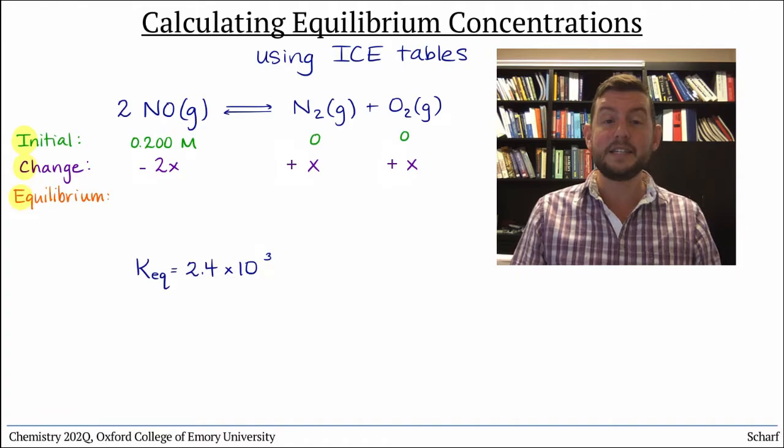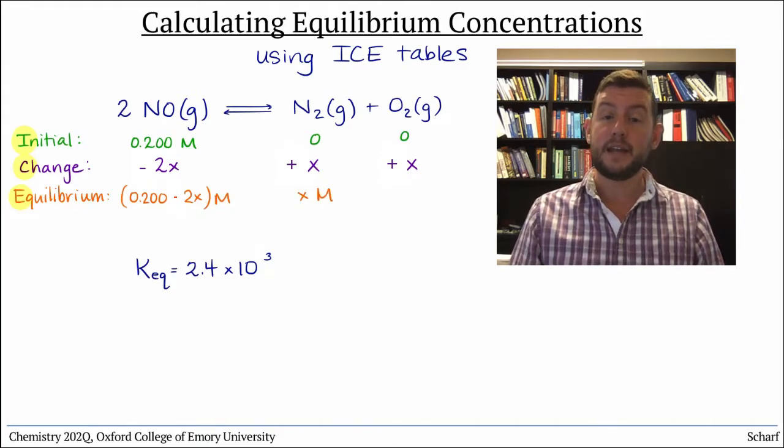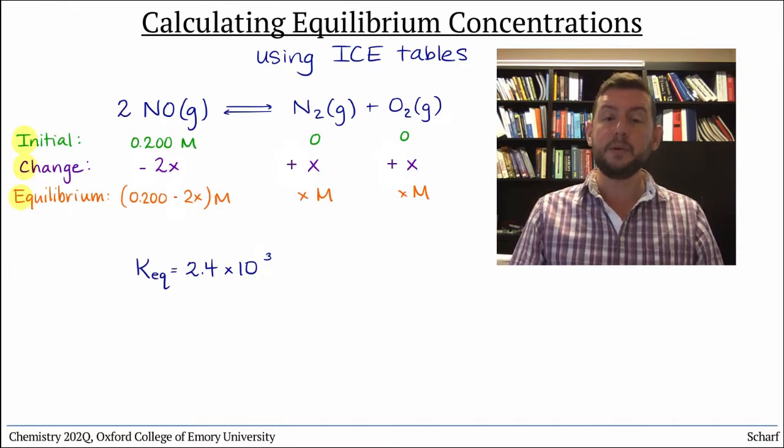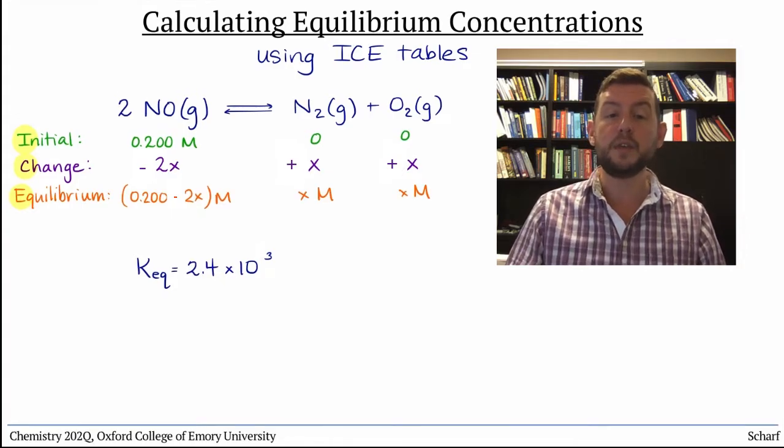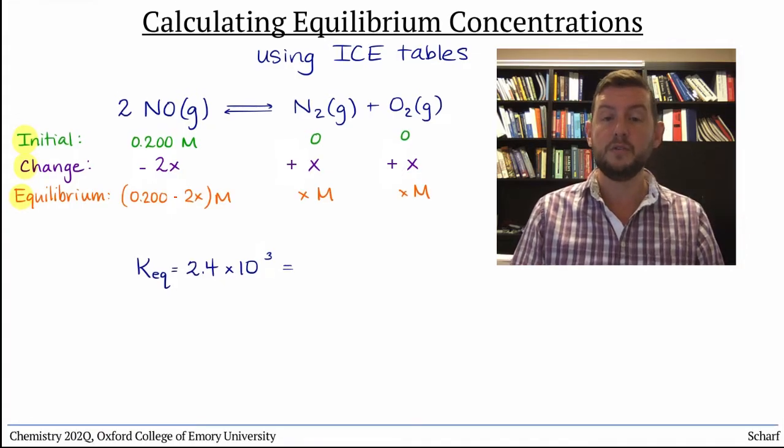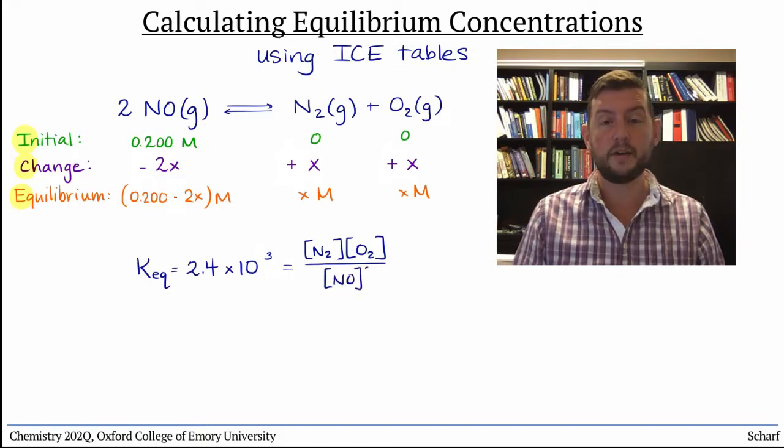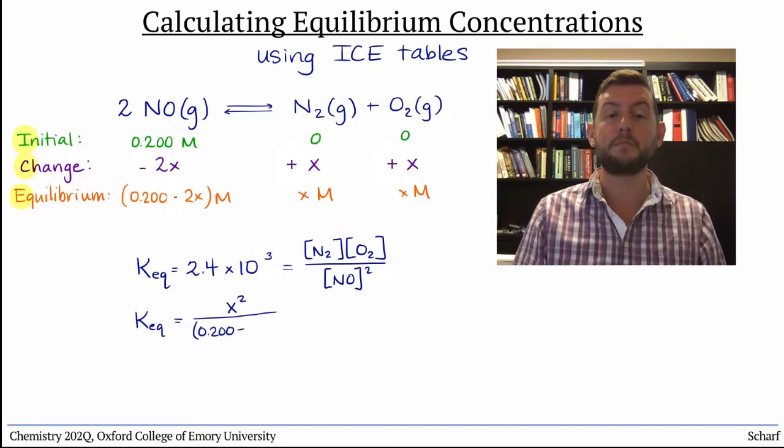So at equilibrium, in the bottom row, we just add up the initial and change rows. Now, here's the fun part. Since we know the equilibrium constant for this reaction, 2.4 times 10 to the 3, and we know that that number must equal the equilibrium concentration of N2 times the equilibrium concentration of O2 over the equilibrium concentration of NO squared, we can plug in our values from the bottom row of our table.